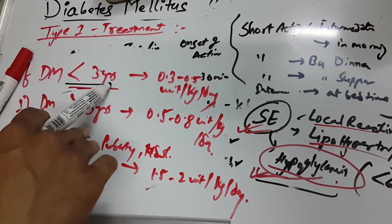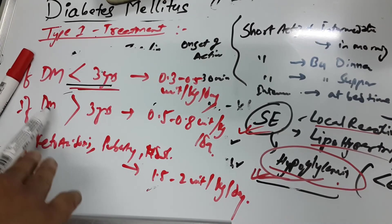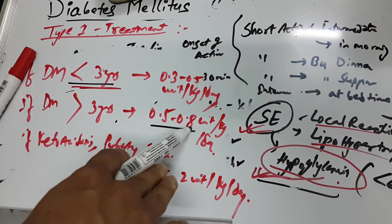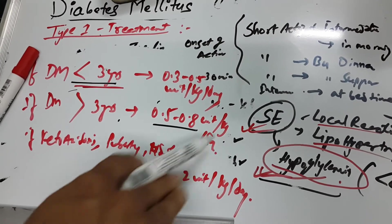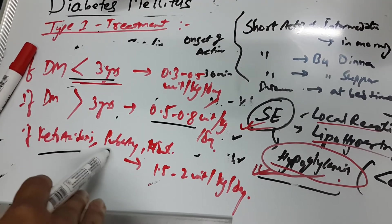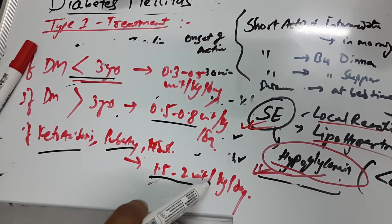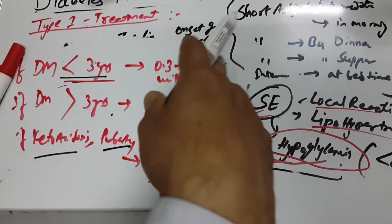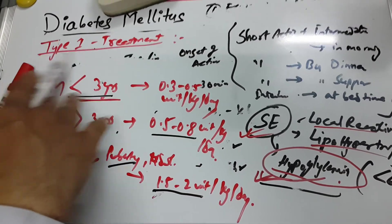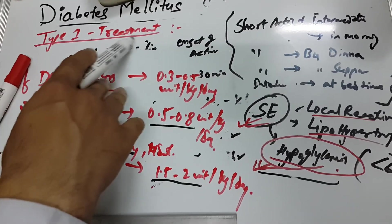To recap the dosage: less than 3 years — 0.3 to 0.5 units/kg/day; more than 3 years — 0.5 to 0.8 units/kg/day; ketoacidosis, puberty, or adolescence — 1.5 to 2 units/kg/day. We also need to remember the combination regimens discussed. That's all for Type 1 treatment. In the next video, we will cover Type 2 diabetes mellitus treatment.